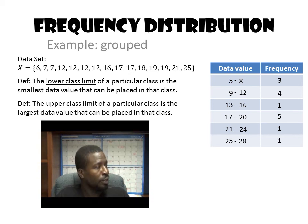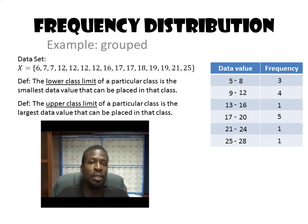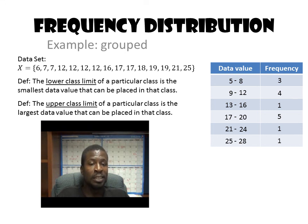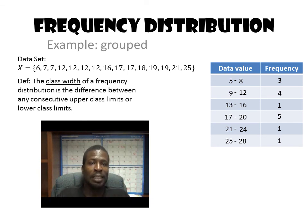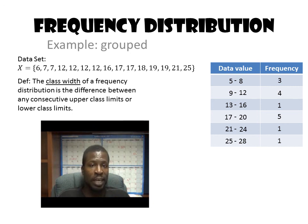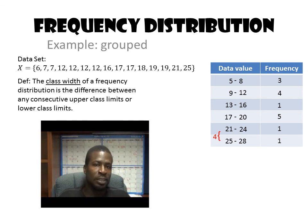Now I want you to take note of something. Notice that the difference between consecutive lower class limits — or consecutive upper class limits — is the same number. For instance, the lower class limit of the first class is 5 and the next is 9; 9 minus 5 equals 4. That number 4 is a special value called the class width — the difference between consecutive lower or upper class limits. And if you look at all the class limits in our table, they're all the same: between 5 and 9 is 4, 9 and 13 is 4, 13 and 17 is 4, 17 and 21 is 4, and 21 to 25 is 4. All the lower class limits — and likewise the upper class limits — have the same width of 4.